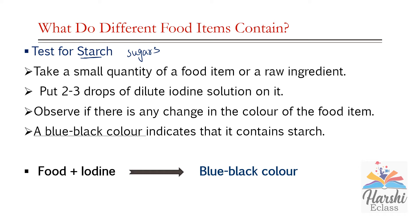Coming to sugar — sources of sugars are sugarcane, fruits, honey, etc. How to test whether food contains starch or not? First, we need to take a small quantity of a food item or a raw ingredient. Then add 2 to 3 drops of dilute iodine solution on it. Observe if there is any change in the color of the food item. If it gives a bluish-black color, it indicates that it contains starch.